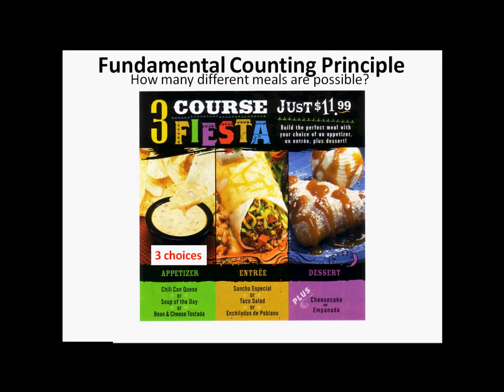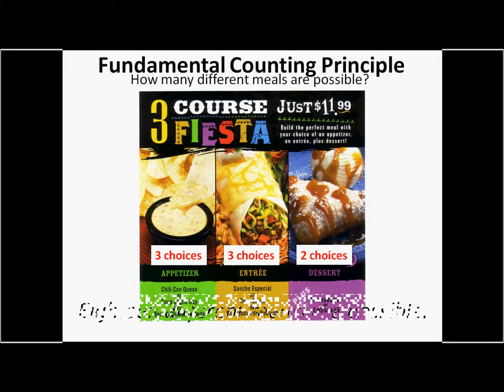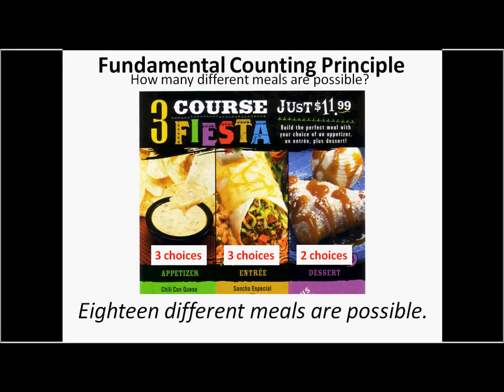You've got your entree, the sancho especial, the taco salad, and the enchiladas de poblano. Pardon my horrible Spanish. So we have three choices. And then we have our dessert. Which is how many choices? We've got your cheesecake or your empanada. So it's two choices. Well, we just multiply three times three times two, and you get 18 different meals. You could have 18 different meals.